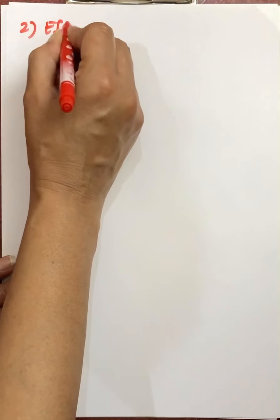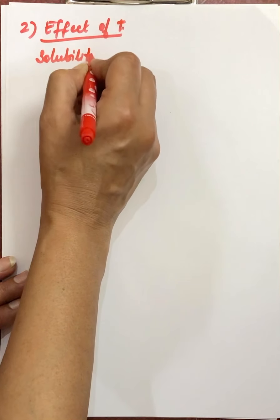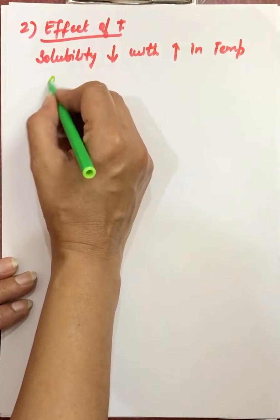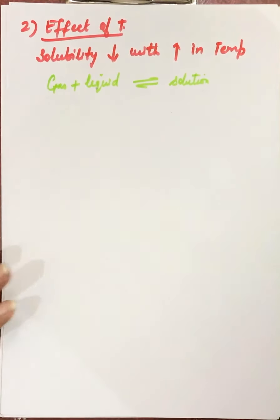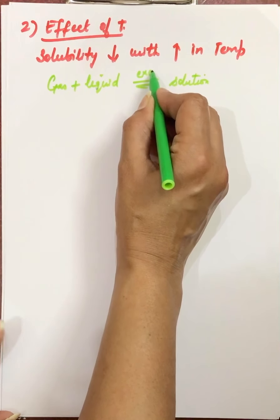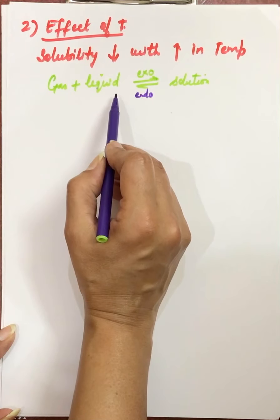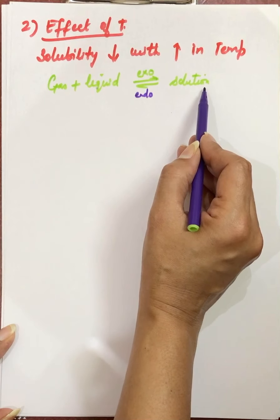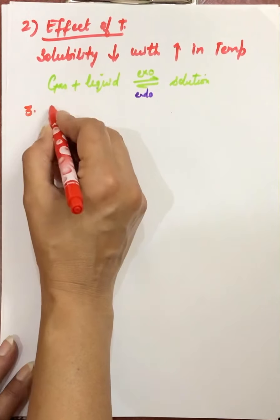The next factor is effect of temperature. For gas in liquid solutions, solubility decreases with increase in temperature, because when gas dissolves in liquid the process is exothermic in nature — there is evolution of heat. According to Le Chatelier's principle, increasing temperature shifts the equilibrium toward the endothermic side, causing gas to separate out from the liquid. So solubility of gases decreases with increase in temperature.